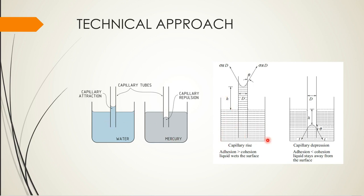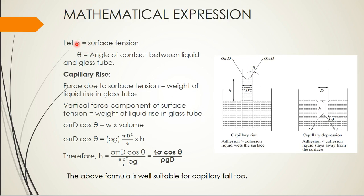Let us see the free body diagram and how the forces are acting. This is the meniscus. The forces acting are surface tension, which acts outwards, and the weight of the water acting downwards at the height level in the tube. Theta is the angle of contact between the water and the glass tube. Sigma is the surface tension and theta is the angle of contact between the liquid and the glass tube.